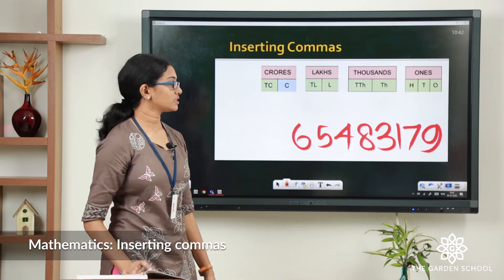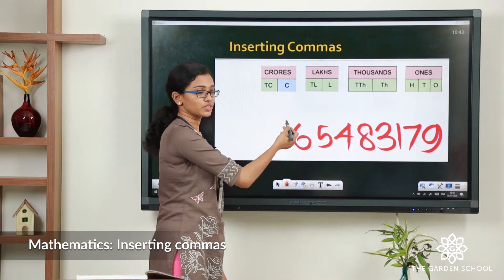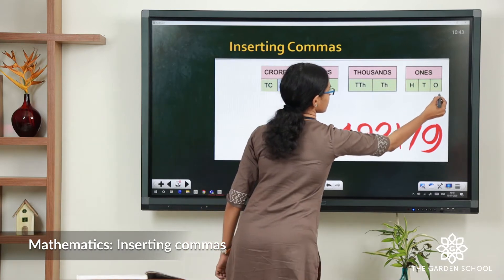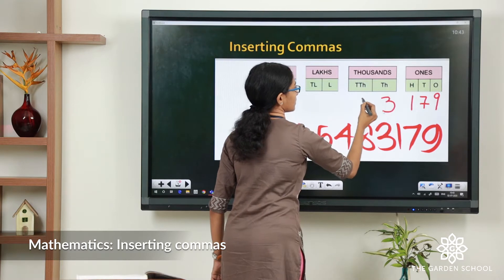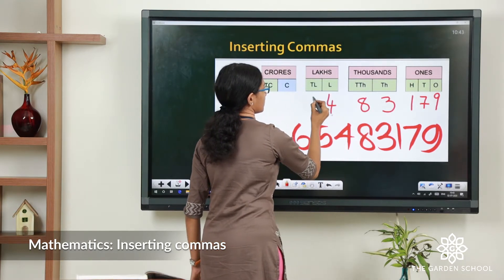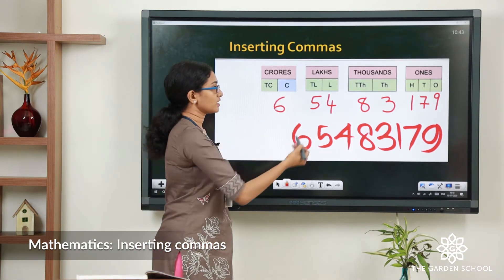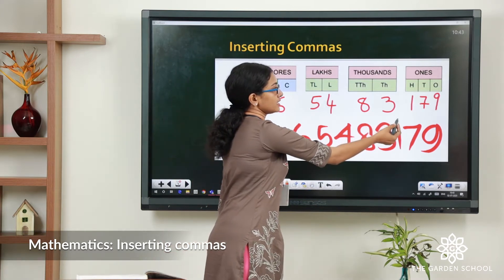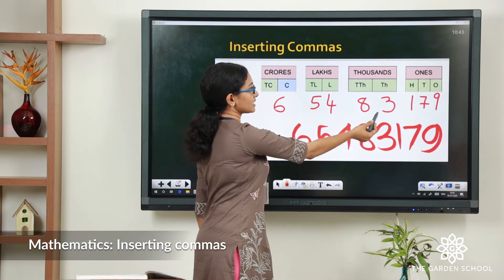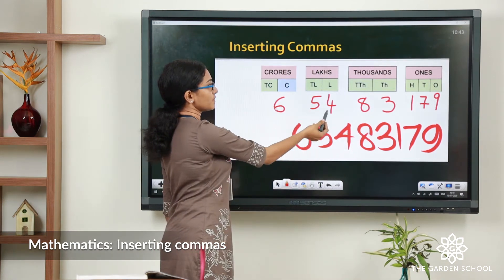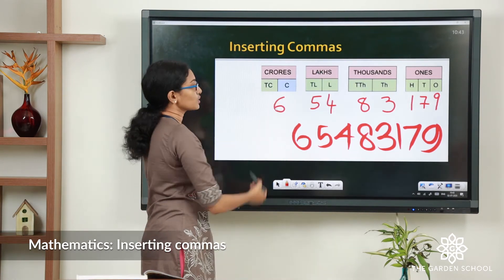Let us see that with an example. We have a number here. Let us try writing this number in the place value chart. The digits 1, 7, 9 will come under the 1s period. The digits 8 and 3 will come under the 1000s period. Digits 5 and 4 will come under the lakhs period, and the digit 6 will come under the crores period.